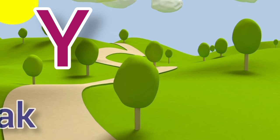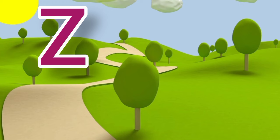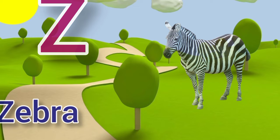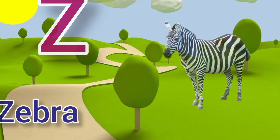Y for yak, yak means pahadi shad. Z for zebra, zebra means chithidhar ghoda. Thanks for watching. Please like, share and subscribe to my channel.